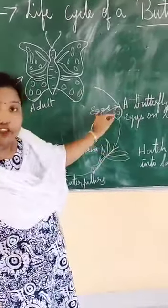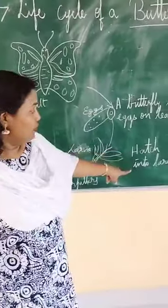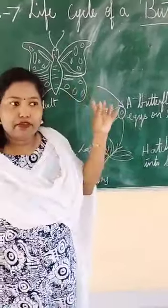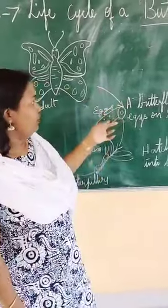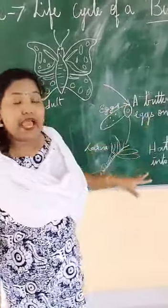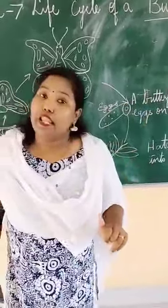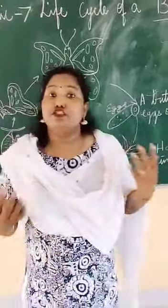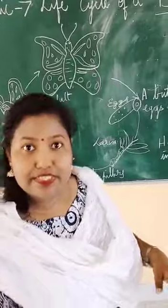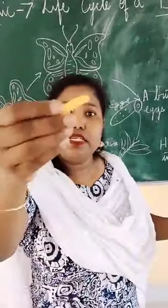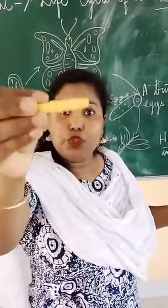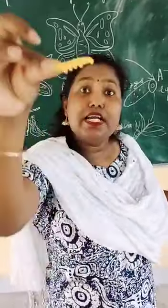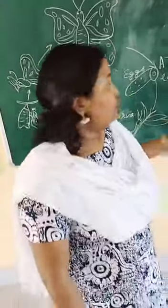These eggs on the leaves hatch into larva. The egg which the butterfly lays on the leaf, these eggs hatch into larva. Now this larva grows into a caterpillar. You know what a caterpillar is — when you go to the garden, you will find it. This is a caterpillar.